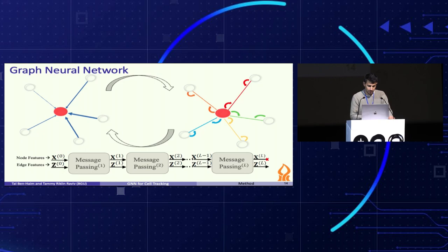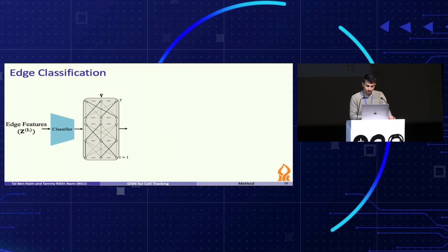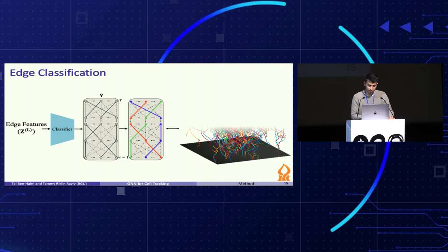Using the edge features from the last step, we can classify the edges as active and non-active. To do so, we use a simple MLP model. Now, we can look at the paths in the graph, extract the tracks of each cell in the sequence, and construct the cell lineage trees for the entire sequence.